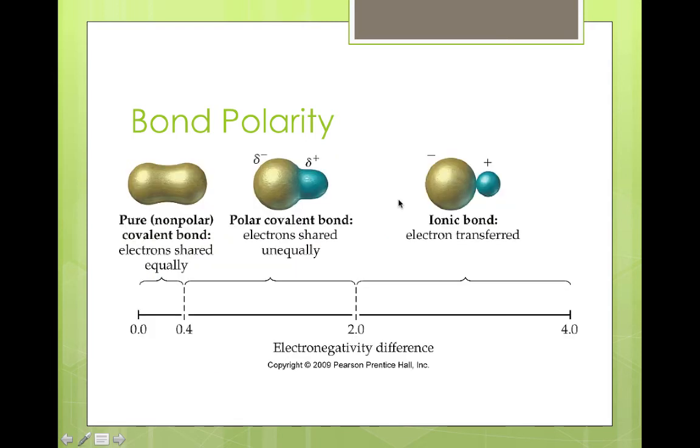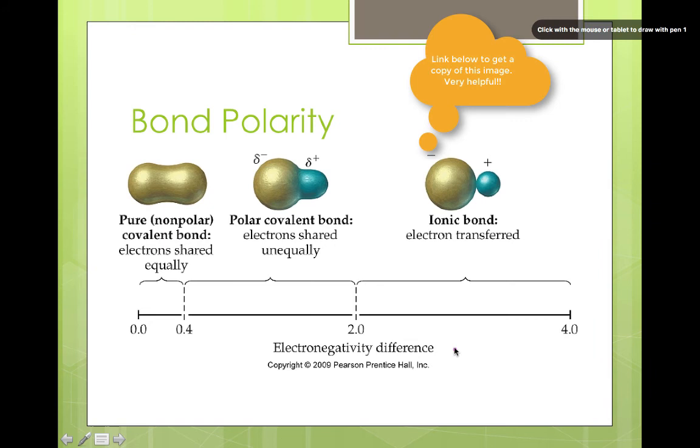Before we jump into an actual example, I wanted to show this particular image. This is a depiction of the cutoffs in delta EN that would be necessary for the different bond types. This electronegativity difference is really your value for delta EN. When you look up your two individual atoms and subtract them from one another, if that difference is less than 0.4, we would think of our molecule as being non-polar. It's not a big enough difference to cause a noticeable shift in electrons and you get even sharing.